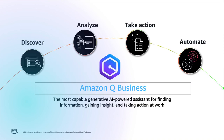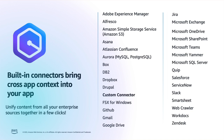Q-Business is the most capable generative AI-powered assistant for finding information, gaining insight and taking action at work. It helps make your organizational data more accessible with the ability to combine insights and answer questions across every data source in the organization. It can also generate content, solve problems and take actions across applications. Q-Business is built with security and privacy in mind from the start, making it easier for organizations to use generative AI safely. Amazon Q has pre-built connectors for enterprise data systems and you can find the latest list of available connectors on the AWS website.